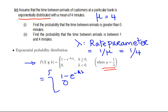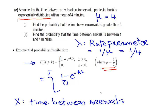We're told that the probability of X less than or equal to k, where X is the time between arrivals. What is the probability of X greater than or equal to 5? That's what we're asked here in this question. We can use the formula for probability of X less than or equal to k, and just find the complement of that.